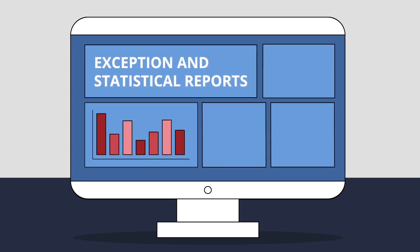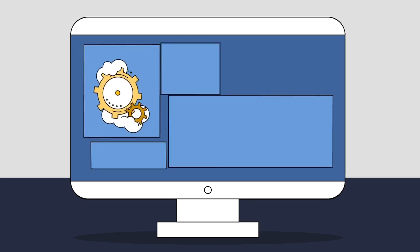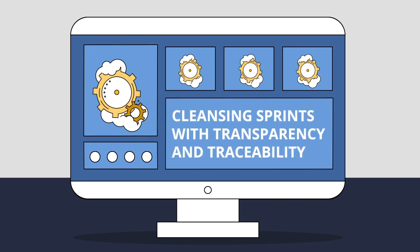Exception and statistical reports identify and flag any existing poor quality data not conforming to business rules. And work is split into bite-sized chunks, allowing you to manage cleansing sprints with transparency and traceability.